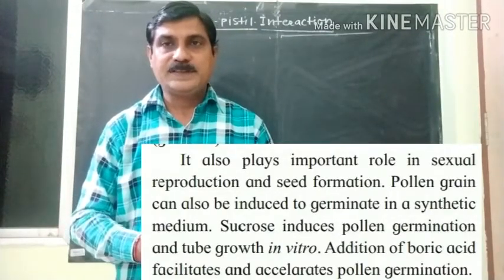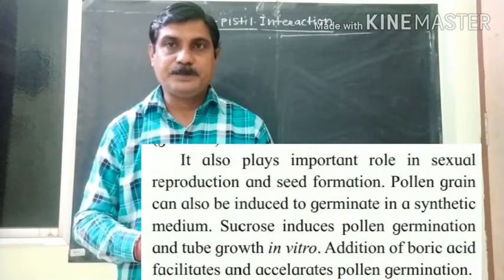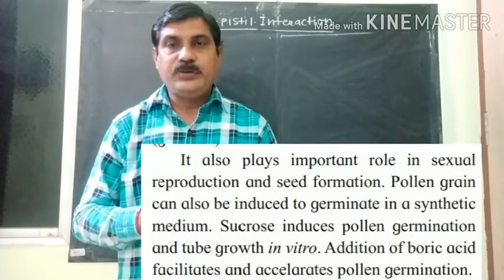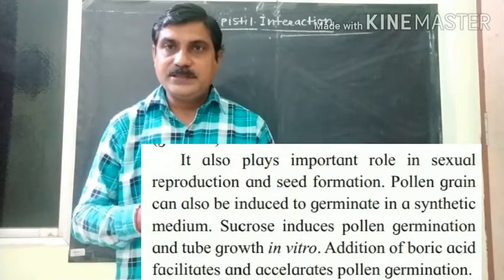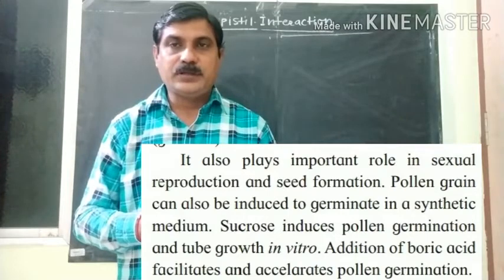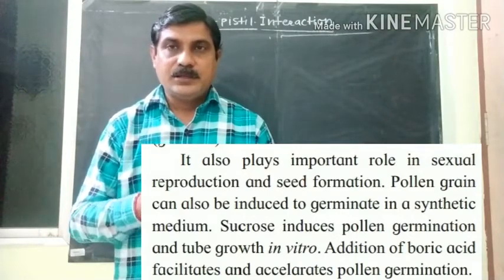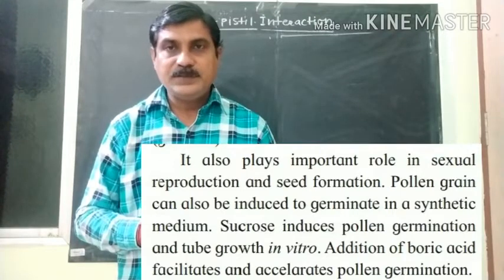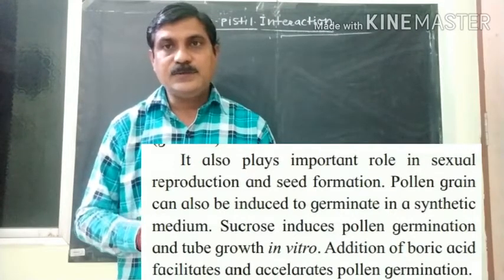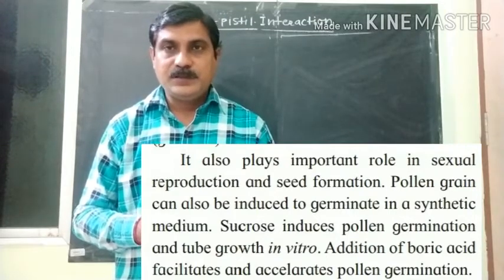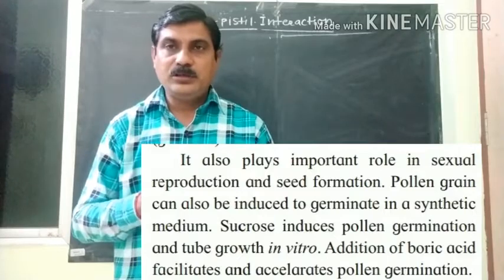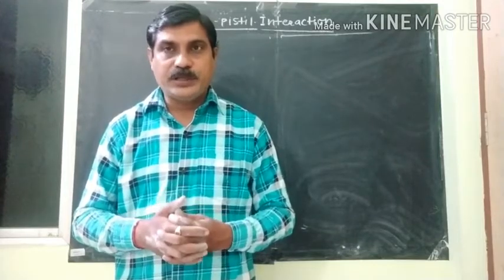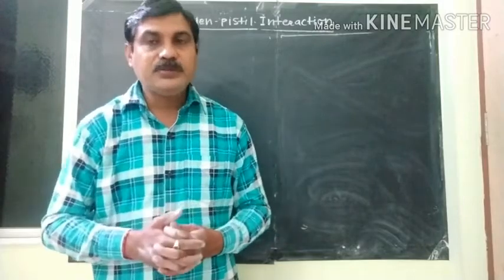Pollen-pistil interaction plays an important role in sexual reproduction and seed formation. The germination of pollen grain also takes place via an in vitro mechanism, where pollen grain germination occurs in a synthetic medium. For this, sucrose is used along with boric acid, which is added for acceleration of pollen tube formation.